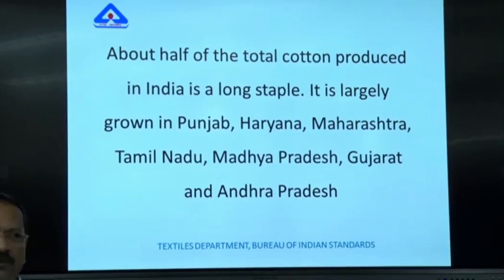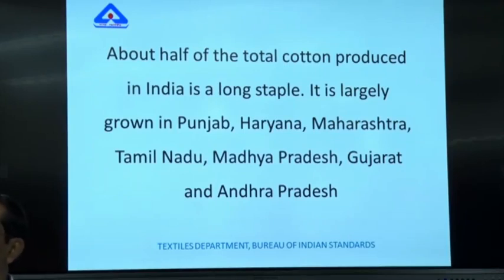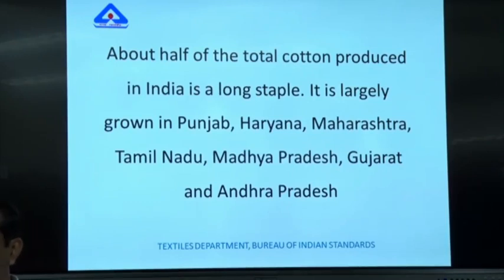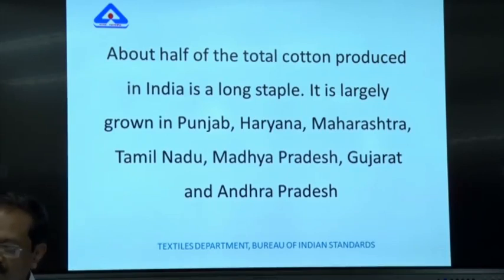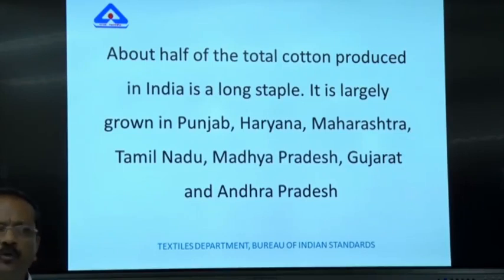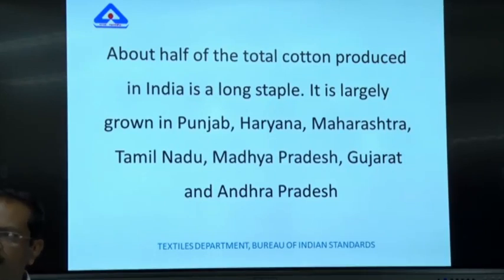Mal mal — muslin — is a variety of cotton cloth that is very fine. The famous Dhaka muslin, produced in Bangladesh, was so fine that one yard of cotton could pass through a ring. That fineness is possible because of the length of the cotton fiber. Medium staple cotton ranges from 20 to 24 millimeters.